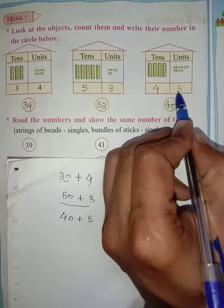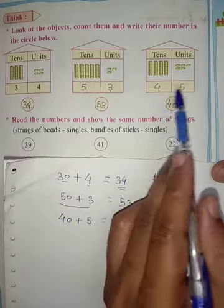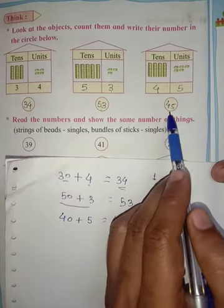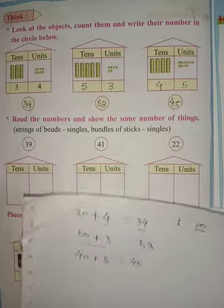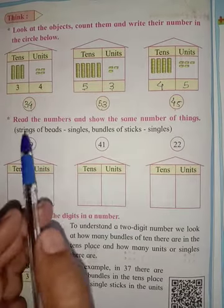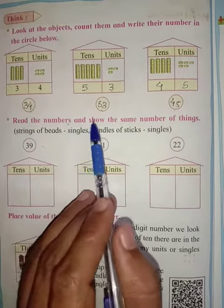Now next exercise: read the numbers and show the same number of things, strings of beads or singles, bundles of sticks or singles.